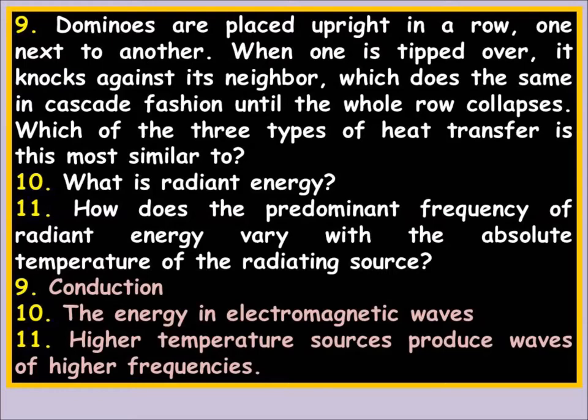How does the predominant frequency of radiant energy vary with the absolute temperature of the radiating source? Higher temperatures produce waves of higher frequencies. Higher frequency means shorter wavelength — gamma is the highest frequency, radio waves the lowest. So the higher the temperature, the shorter the wavelength and the higher the frequency. Ask me about that in class if it's confusing.